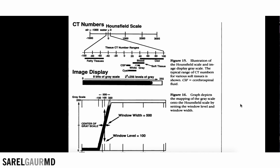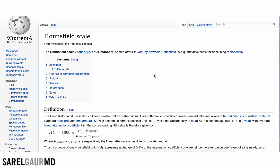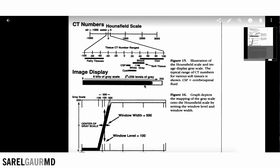Today we're going to be talking about window width and level. The first question is: why do we need window width and leveling? The reason we need window width and leveling is that we have the Hounsfield scale, which is composed of about 4,000 different density values, and we have a grayscale that our eye can only perceive about 20 different shades of gray. It's that imbalance between the amount of grayscale we can visually perceive and the amount of density information encoded in a CT that causes us to need window width and level.